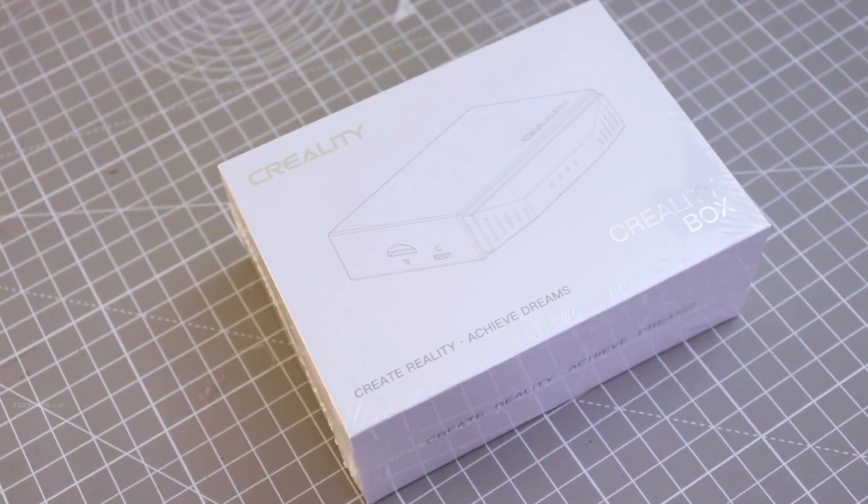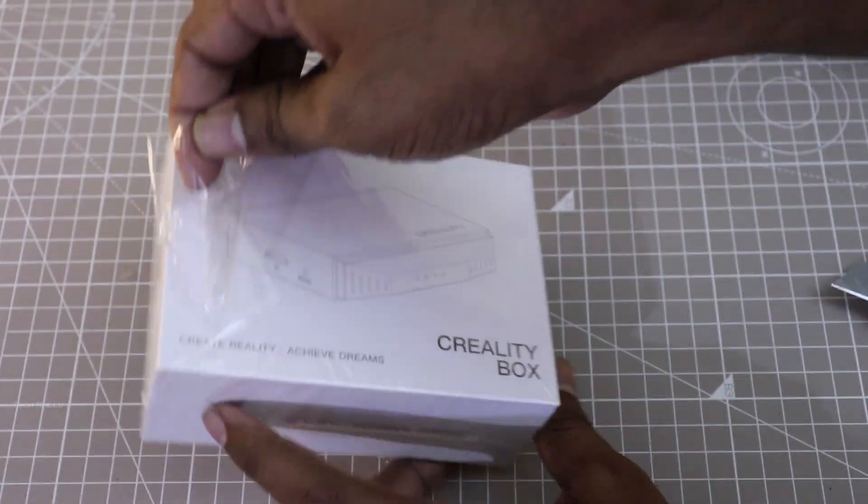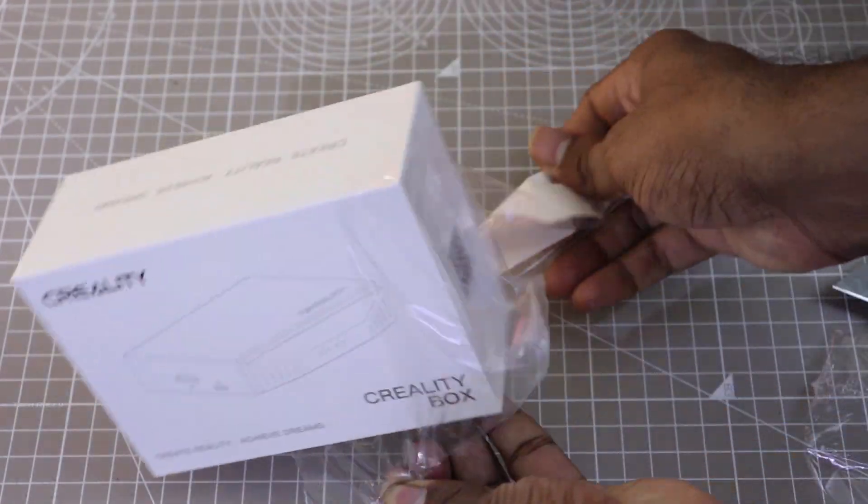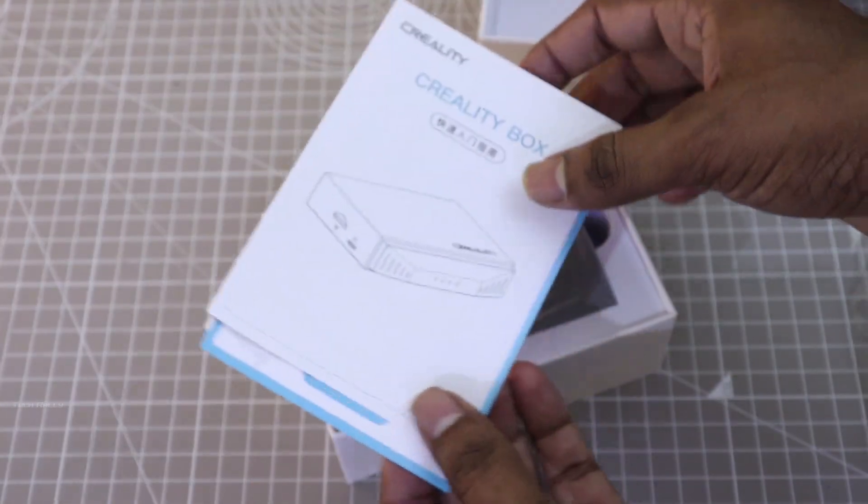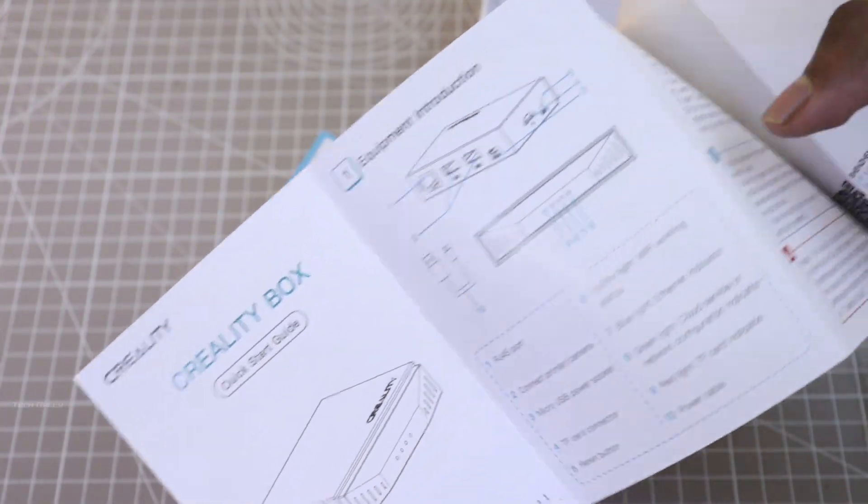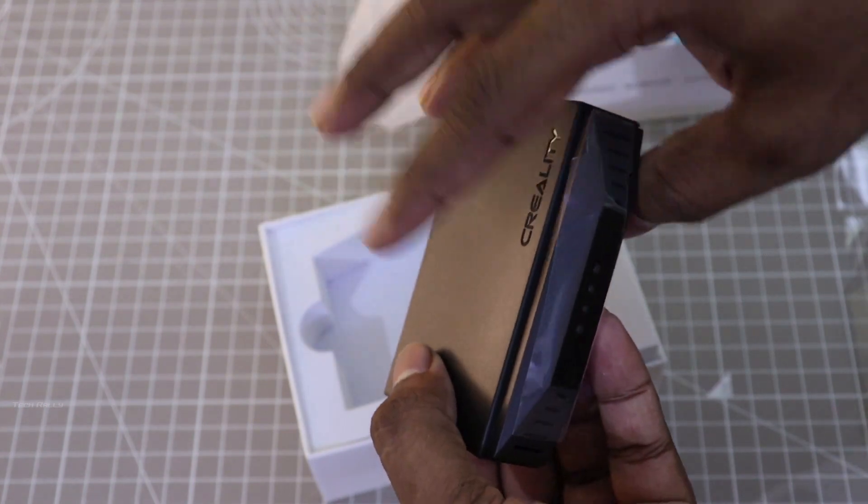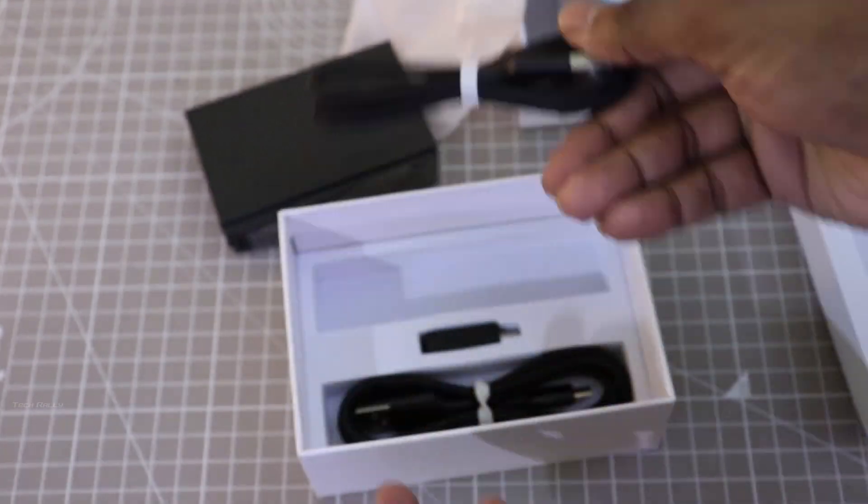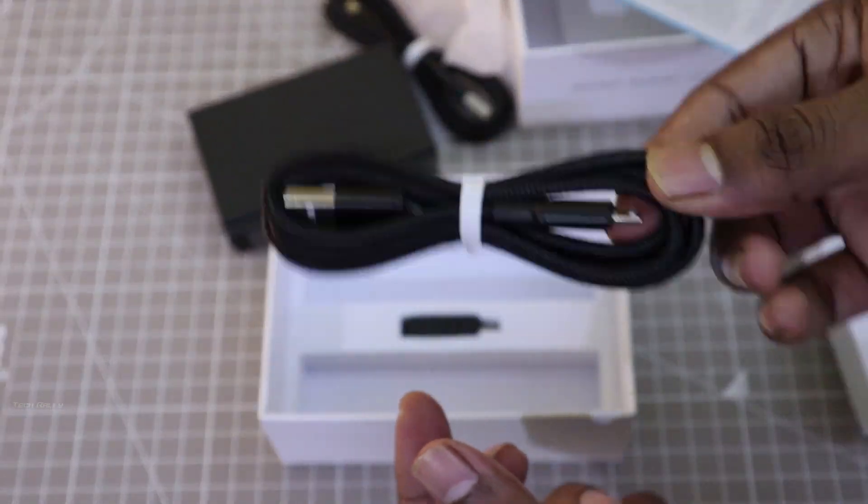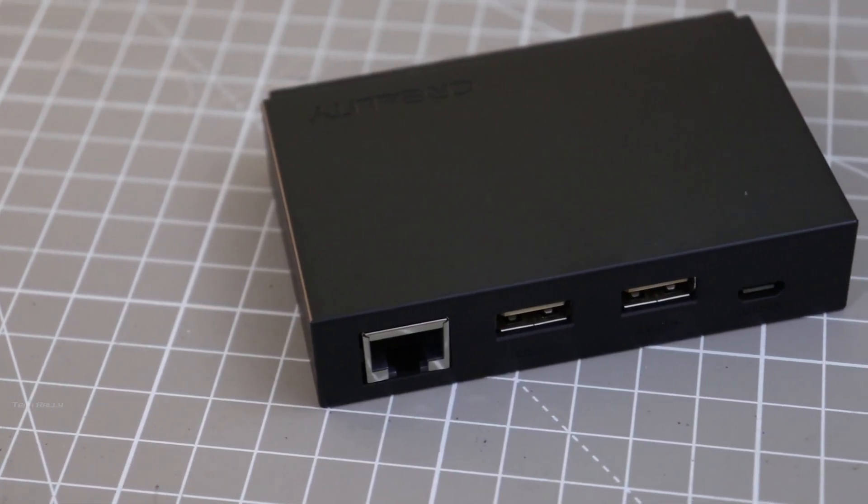The Ender 3 Max also comes with the Creality WiFi box. Inside, there is a user manual and the WiFi box itself. It also comes with two USB cables and a mini USB Type-B converter. I will also try to make a separate video on this WiFi box.